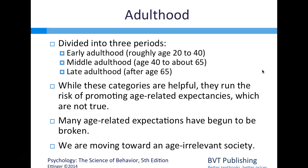Now let's talk about adulthood, the next phase after adolescence. Adulthood is divided into three periods: early adulthood (roughly ages 20 to 40), middle adulthood (40 to 65), and late adulthood (after 65). While these categories can be helpful, they run the risk of promoting age-related expectations that are not always true.